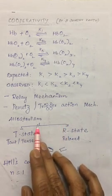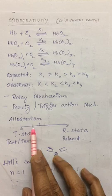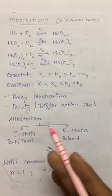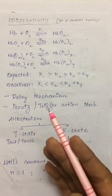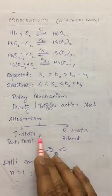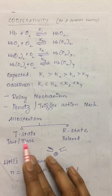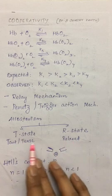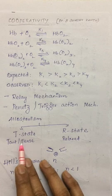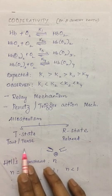To understand cooperativity we need knowledge of the term allosterism. Allosterism refers to the existence of hemoglobin in two different forms or states. The two states are the unbound deoxy state and the bound oxy state. The unbound deoxy state is called the T state — T meaning 'taut' or tense state.